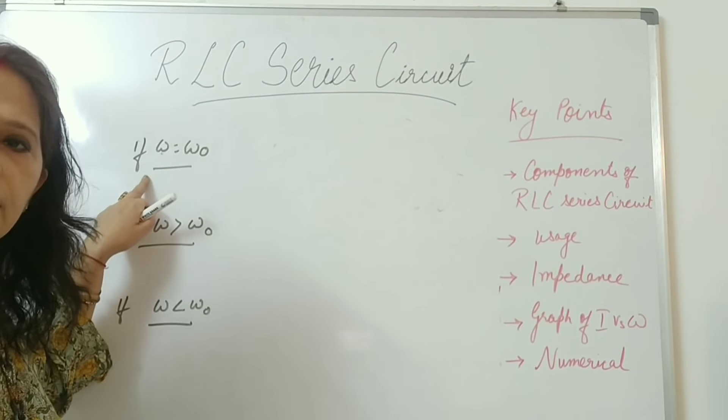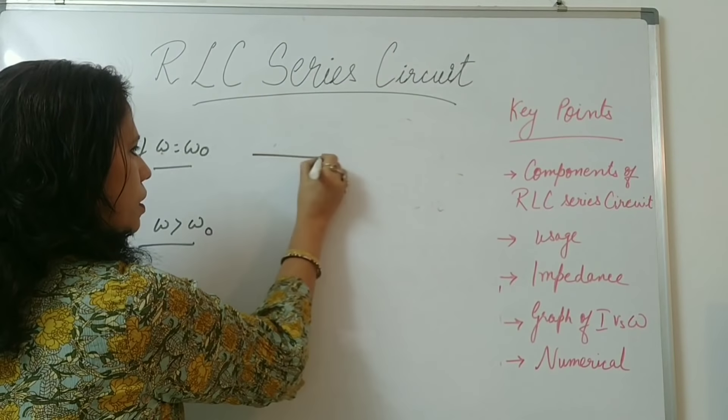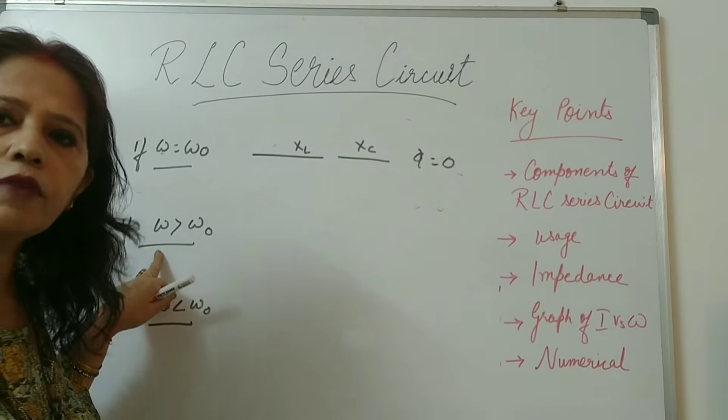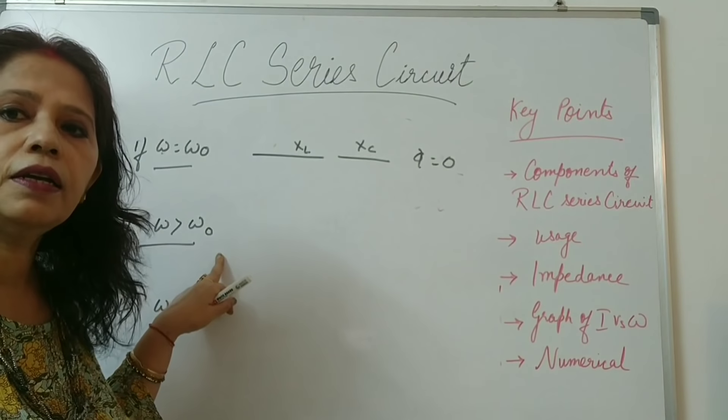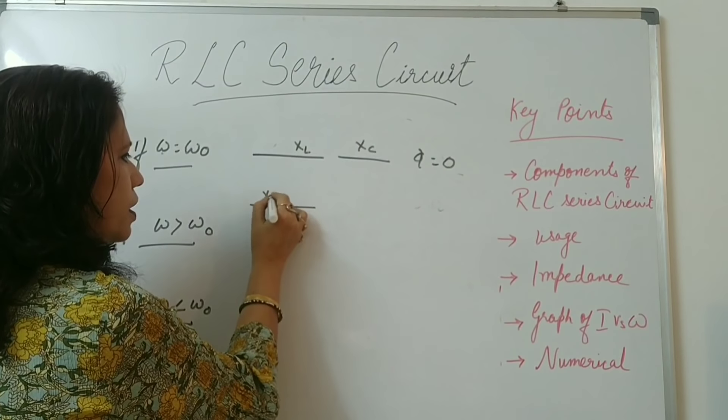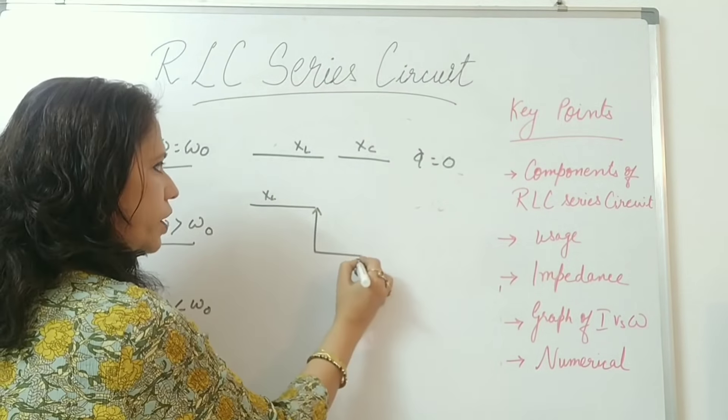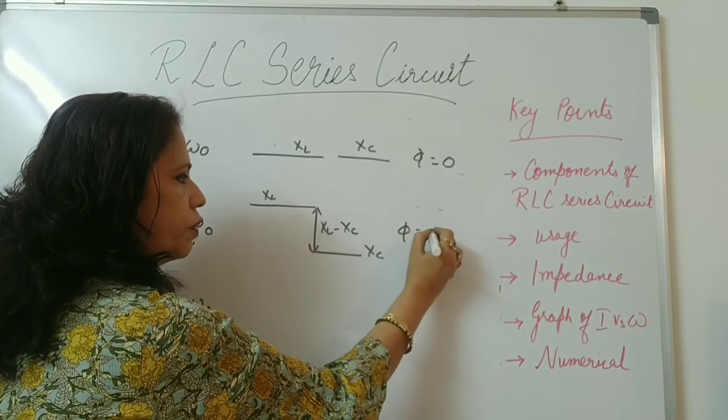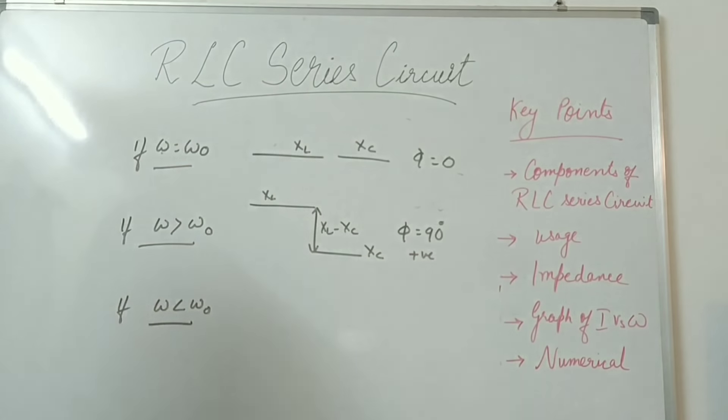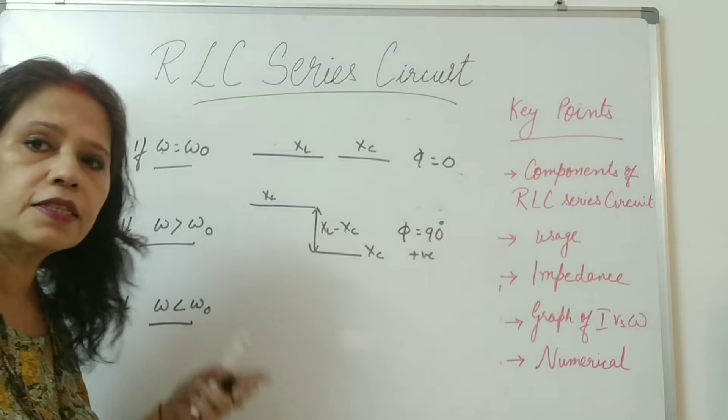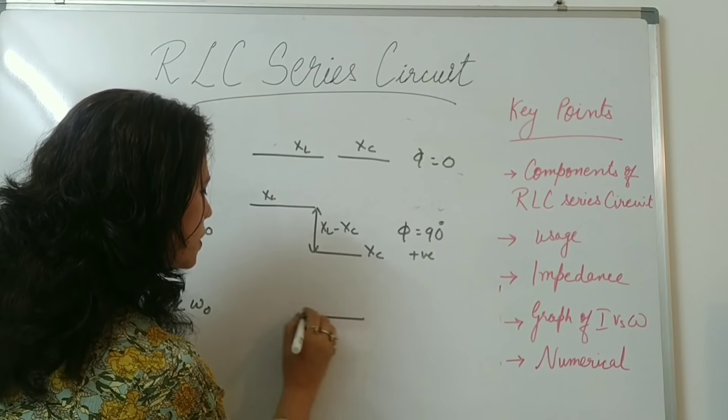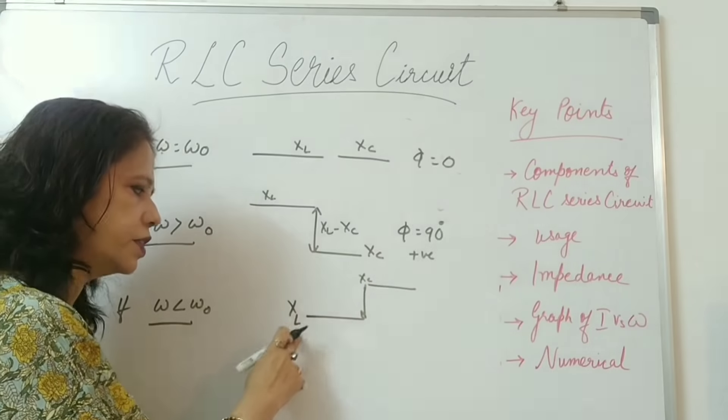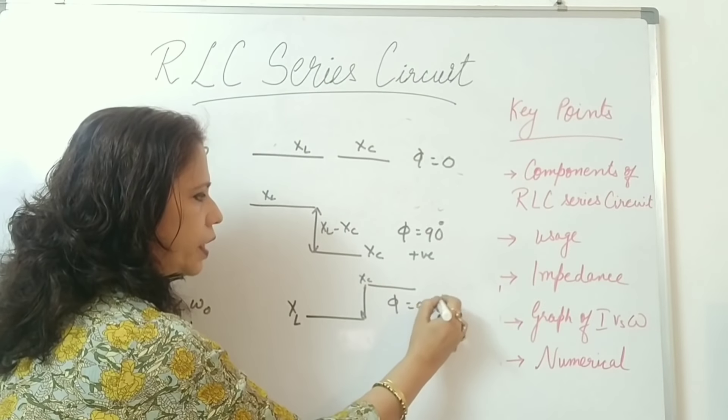Now if the supply voltage is equal to natural frequency. Then in this case XL will be equal to XC. Phi is 0. Now if angular frequency which you are supplying is greater than the natural frequency. Then in this case XL will be exceeding this XC. That means this gap is your XL minus XC. And phase difference will be your 90 degree and it is positive. Now in this case where angular frequency is less than the natural frequency. Then in this case what happens? XL is behind XC. XC is exceeding XL. That means your phase difference will be 90 degree and it is negative.